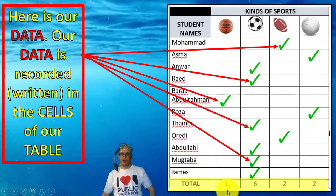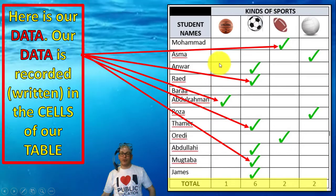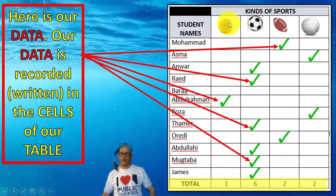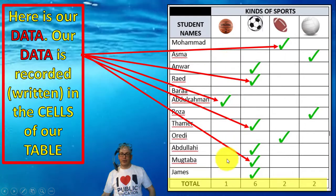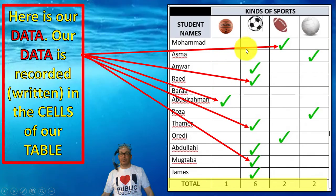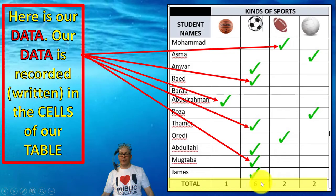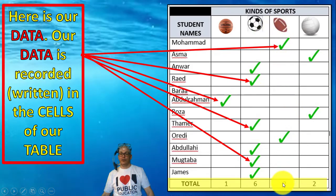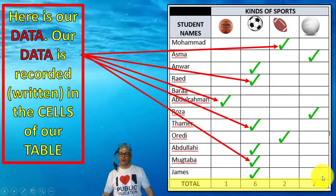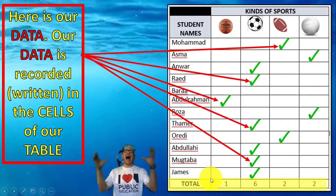And down here, students, we can even add up the scores for each of the columns. In this column, only one person said they liked basketball. Here we had six people, here we had two people, and here we had two people. Total — total means add them all together.